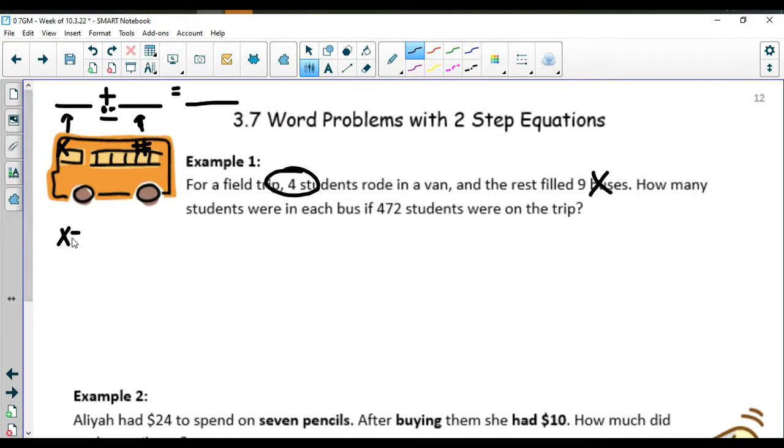X is going to represent students per bus. We have four students in the van and which is telling us to add the 9X. How many students were in each bus if 472 students were on the trip? This is our equals number here.